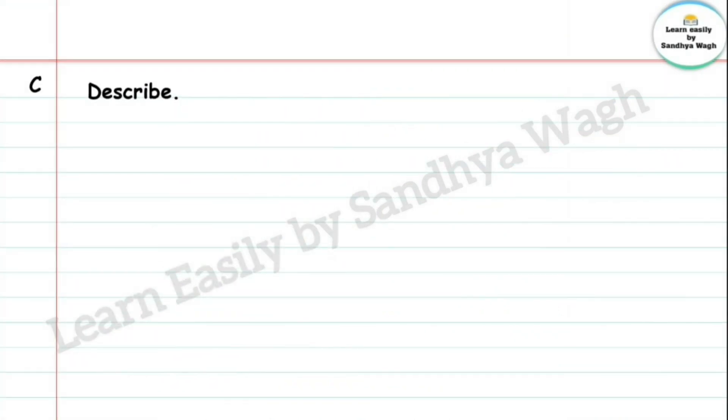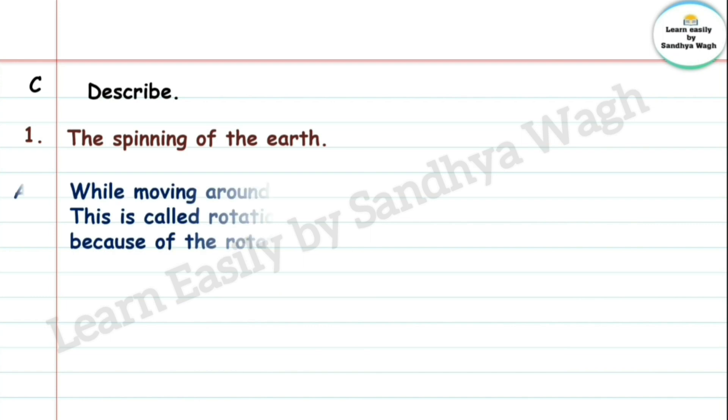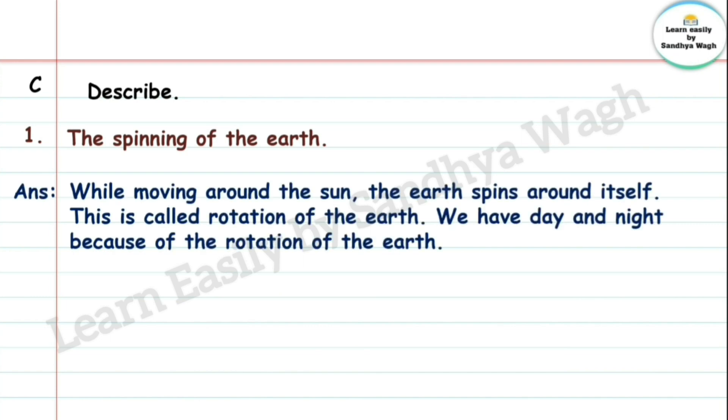C. Describe. 1. The spinning of the earth. Spin manjez firane. Aani earth manjez apali puruthvi. Mag puruthvi che firane. Answer: While moving around the sun, the earth spins around itself. This is called rotation of the earth. We have day and night because of the rotation of the earth.